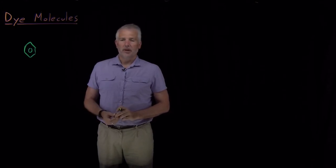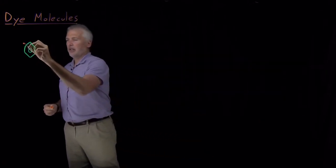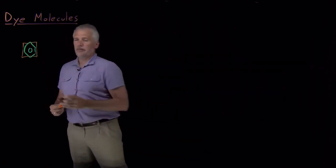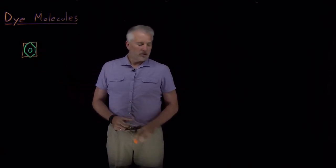A benzene molecule, for example, we could treat fairly well with the two-dimensional particle-in-a-box model where we say the pi electrons are confined to a box that approximates the size of this benzene molecule.